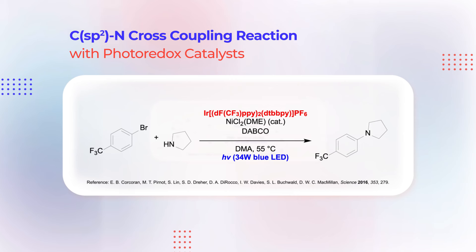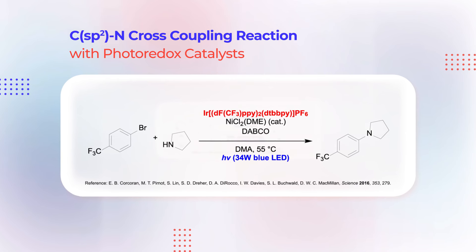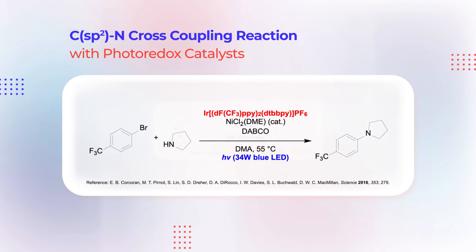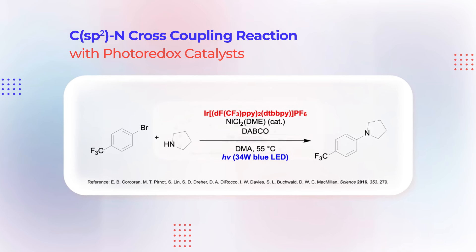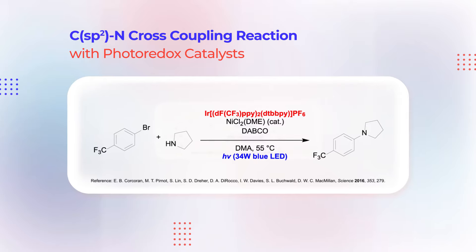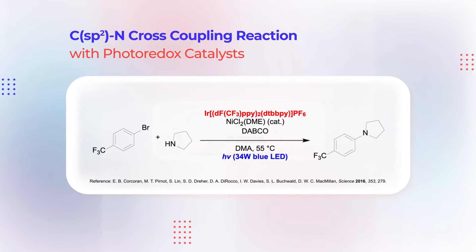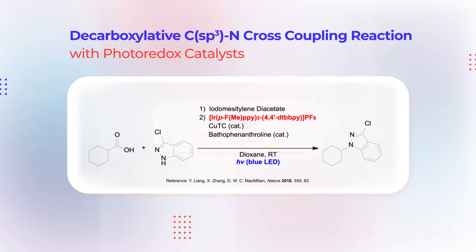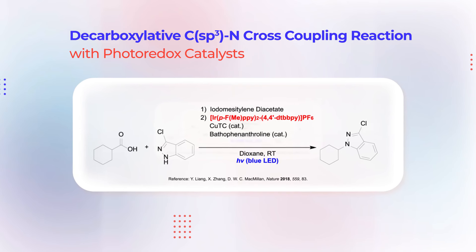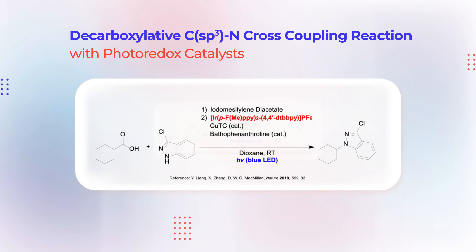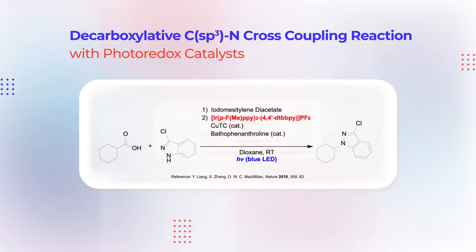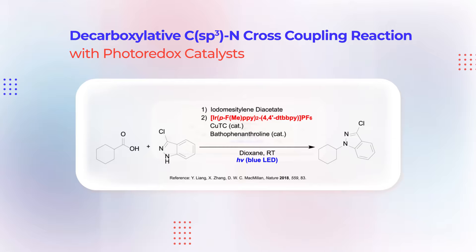Now, let's look at examples of the C–N cross-coupling reaction using ligand-free nickel salts and photoredox catalysts, as well as a decarboxylative C(sp3)–N coupling reaction using copper and photoredox catalysts.